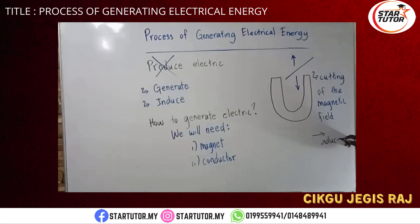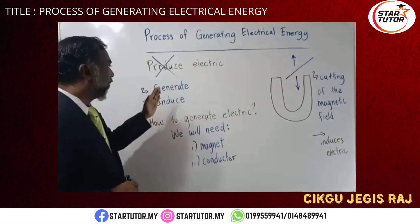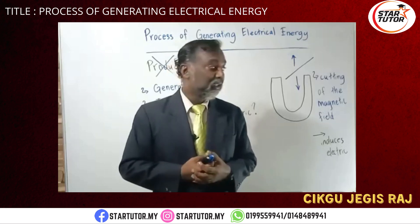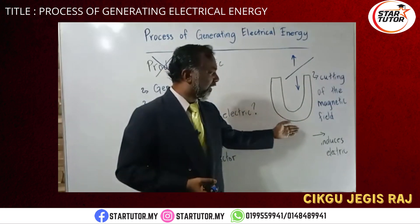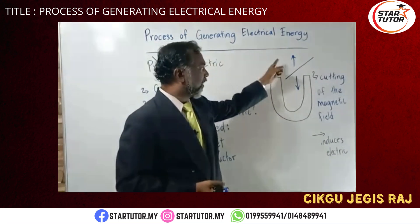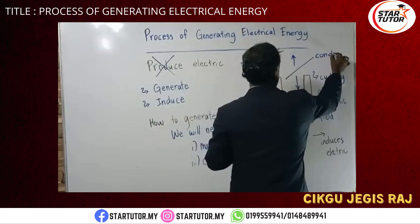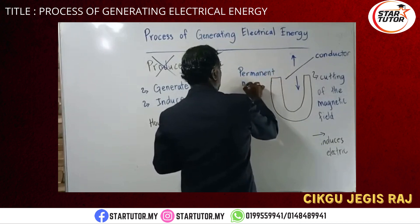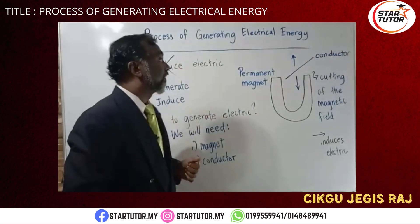The cutting of the magnetic field induces electric. So remember, it's very simple. We want to generate or induce electric because without electric, a lot of things cannot be done. How do you induce electric? By the cutting of the magnetic field. And when you cut the magnetic field, current is induced. Look at the position of the magnet and the movement of the conductor properly. This is your conductor and this is your permanent magnet. This is the basic process of generating electrical energy.